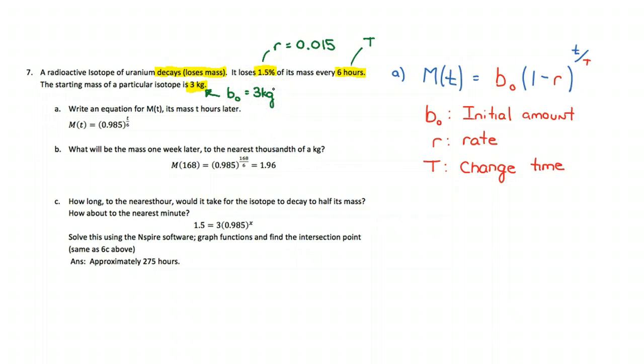Now this problem becomes simply substituting into this relationship. The mass as a function of T is equal to B0, which is 3 kilograms, that's the initial amount, times 1 minus 0.015 to the power of T over 6. We can simplify this to 3 times 0.985 to the power of T over 6.